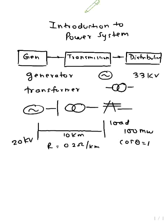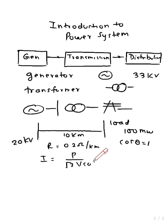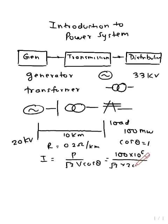We find the current in the transmission line using I = P / (√3 × V × cos θ). Substituting P = 100 MW and V = 20 kV, we calculate the current to be 2886.75 amperes. This is too much current.